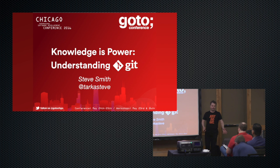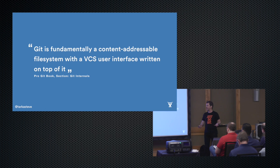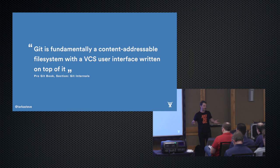Knowledge is power — understanding git. Git is one of those things where you start off thinking you've got the hang of it, and then you do something and it all goes horribly wrong. This is the point where you have to learn a bit about how it works underneath the hood to truly understand it. It's got very leaky abstractions, and you need to understand those to really get work done.